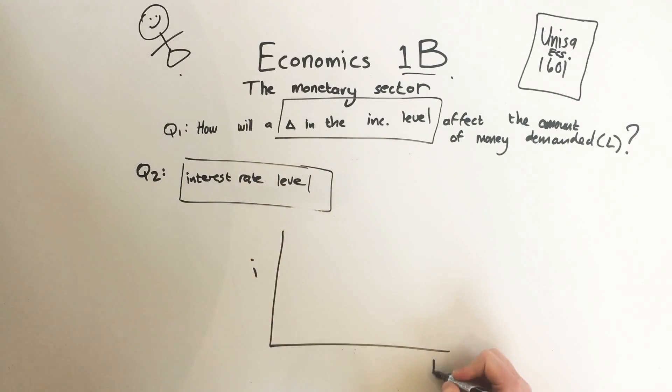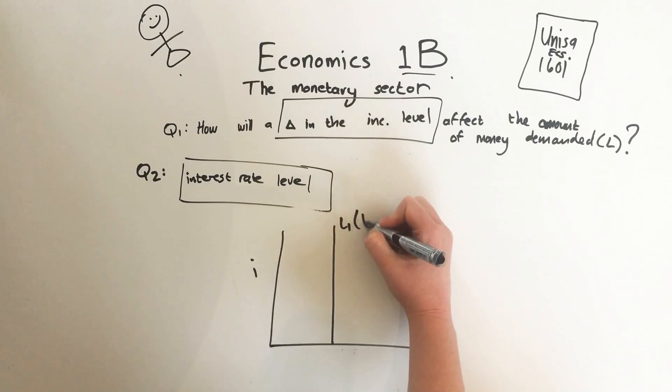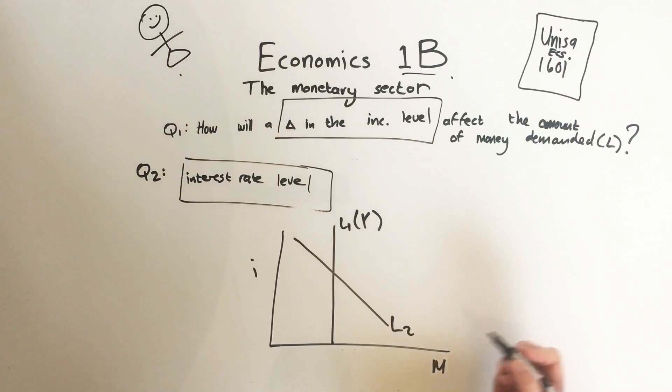The second question is: how will the interest rate level change affect money demand? So we go interest rate here, money here, L1 here which depends on Y, L2 here which depends on interest rate, and the two plus together - that one and that one together - which will give us L, which is L1 plus L2.